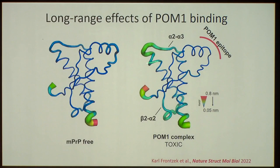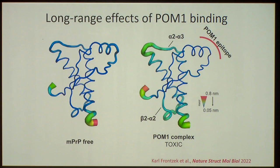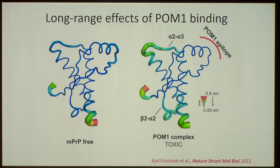The diameter of the tubes in the simulation indicates the oscillations of the prion protein. This part is pretty flexible — it oscillates. However, when POM1 comes in, everything here becomes very stiff and compensatory, while this other part becomes much more flexible. So the question then was: does this have anything to do with the toxicity?